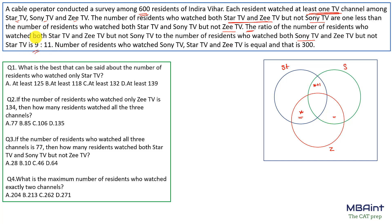So if we express the region (Star TV ∩ Zee TV, not Sony TV) as 9x, then (Sony TV ∩ Zee TV, not Star TV) is x, and (Star TV ∩ Sony TV, not Zee TV) becomes 9x+1. The total of each individual circle equals 300, and the total number of residents surveyed is 600.